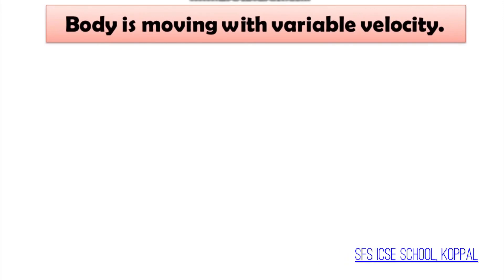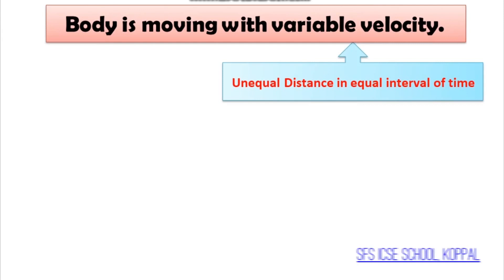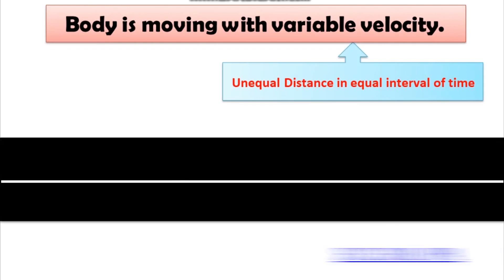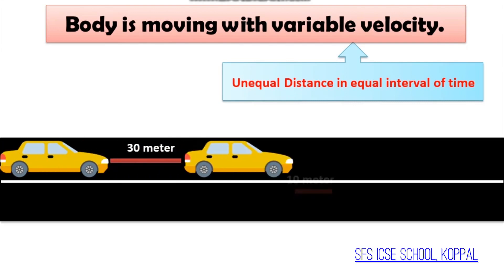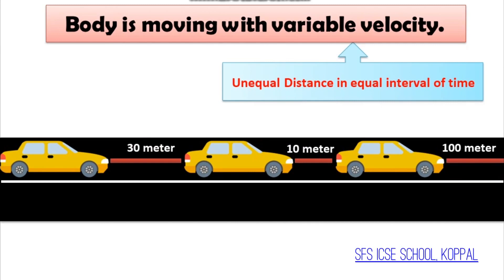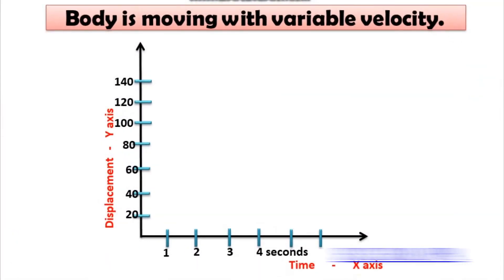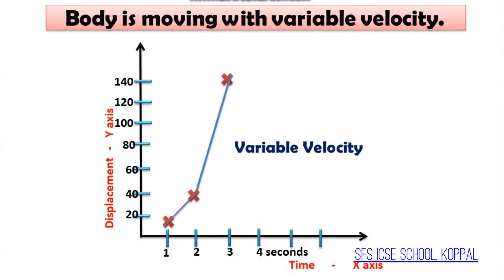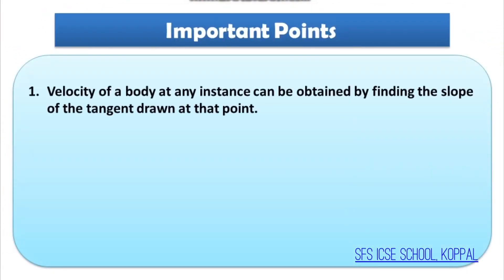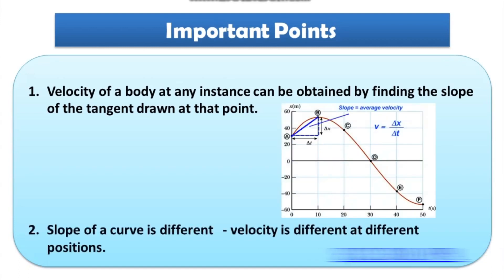Third type: when the body is moving with variable velocity. Variable velocity means the body covers unequal distances in equal intervals of time. For example, a car moves 30 meters in one second, then 10 meters in the next second, and 100 meters in the third second. If we plot a displacement-time graph, it will be a curved line. So if you see a displacement-time graph as a curve, the body is moving with variable velocity. Note: the velocity at any instant can be obtained by finding the slope of the tangent drawn at that point. Since the slope of a curve differs at different positions, velocity is different at different positions.